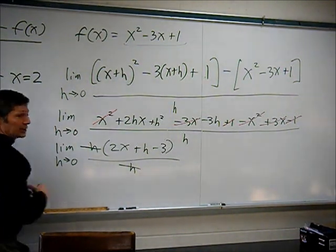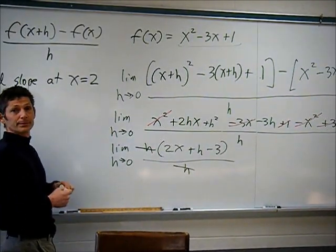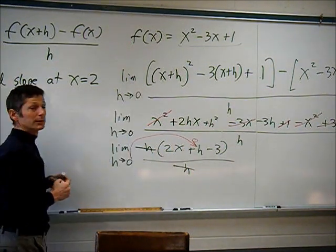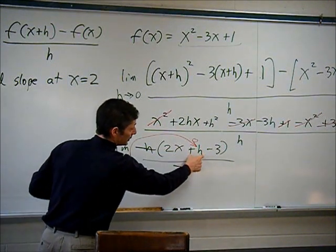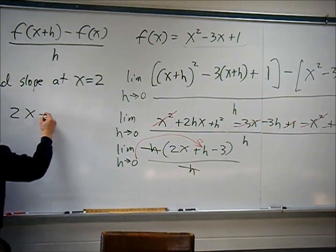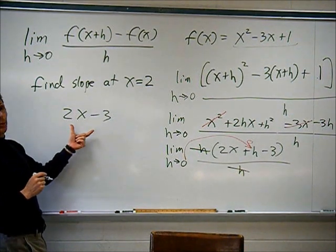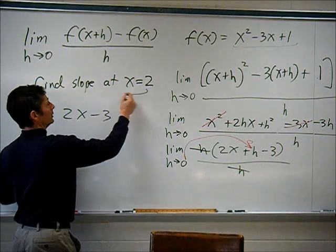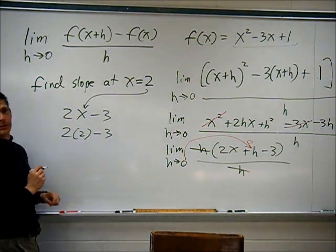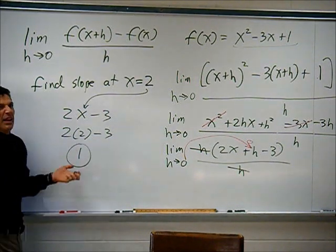Now that I've gotten rid of those h's, I can put in 0 for h. So this is 2x plus 0 minus 3, also known as 2x minus 3. I would like to find the slope for the x value 2. Plug it in: 2 times 2 minus 3 is 4 minus 3, which equals 1. The slope is 1.